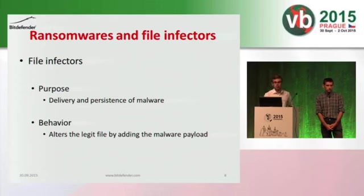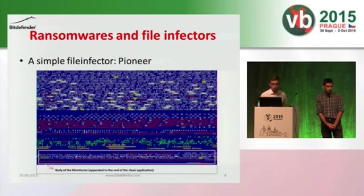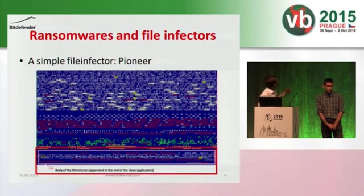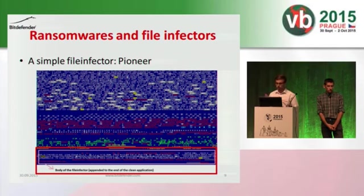Basically, a file affected by a file infector also contains and executes malware code — a malware payload for the infection — while still maintaining the legitimate file functionality. What we have here is a simple file infector: its code is appended to a portable executable file, it hijacks the header so the entry point points to the malware, which does its work and then passes execution to the clean file — like nothing ever happened.